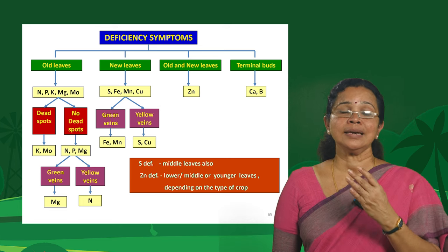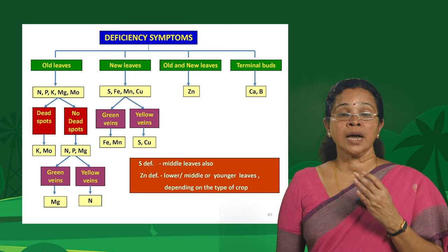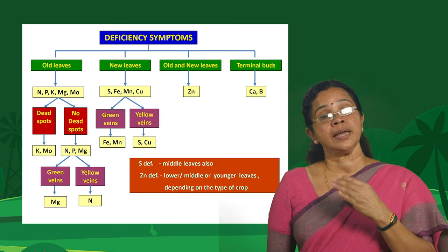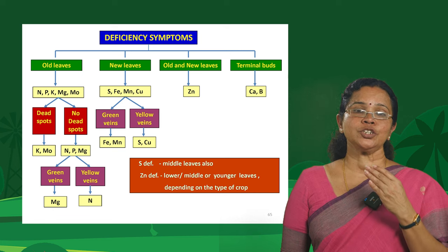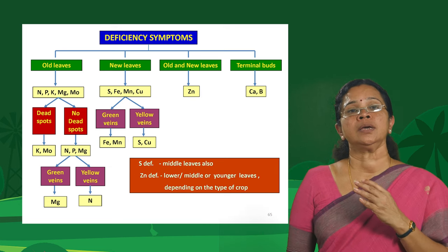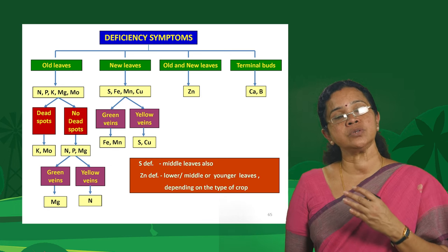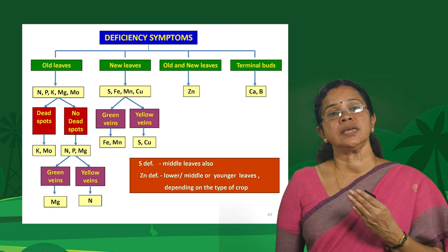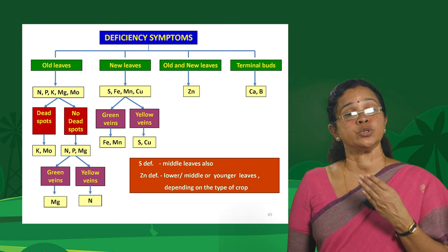For example, zinc and phosphorus — if the soil contains excessive phosphorus, even if zinc is present, the plant can show zinc deficiency due to the antagonistic interaction between zinc and phosphorus. Nutrient interactions are therefore important in diagnosing and treating deficiency symptoms.